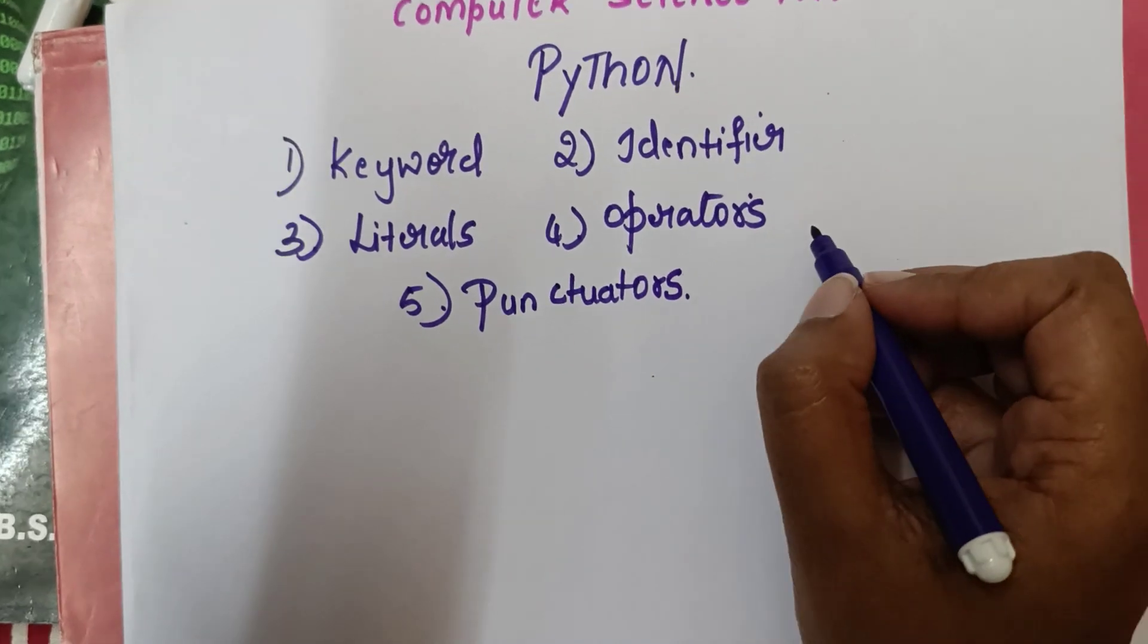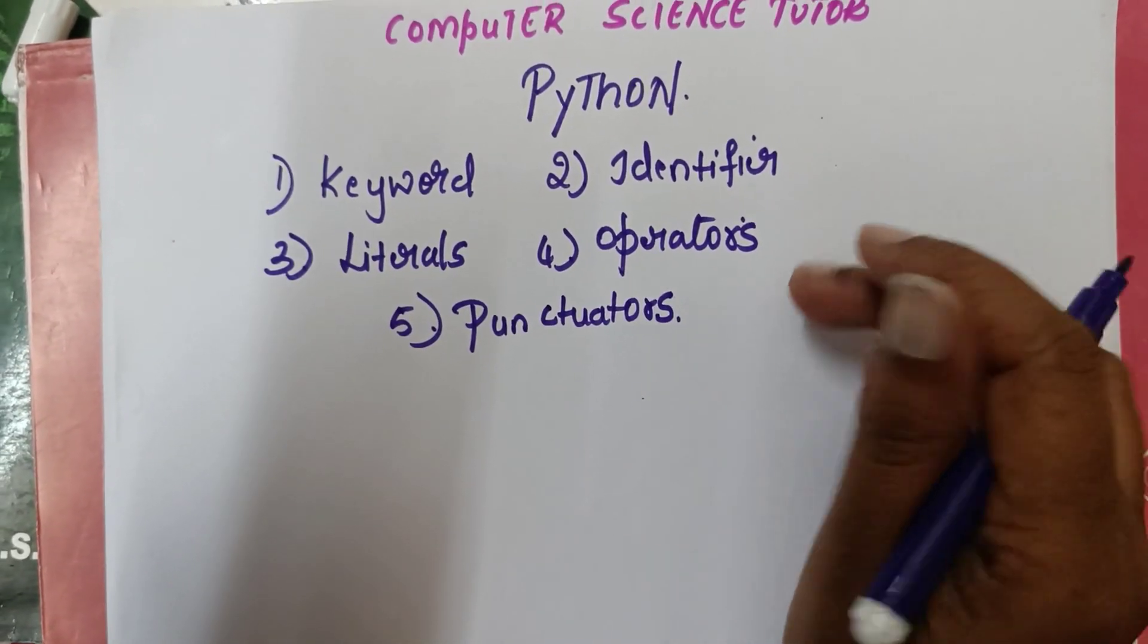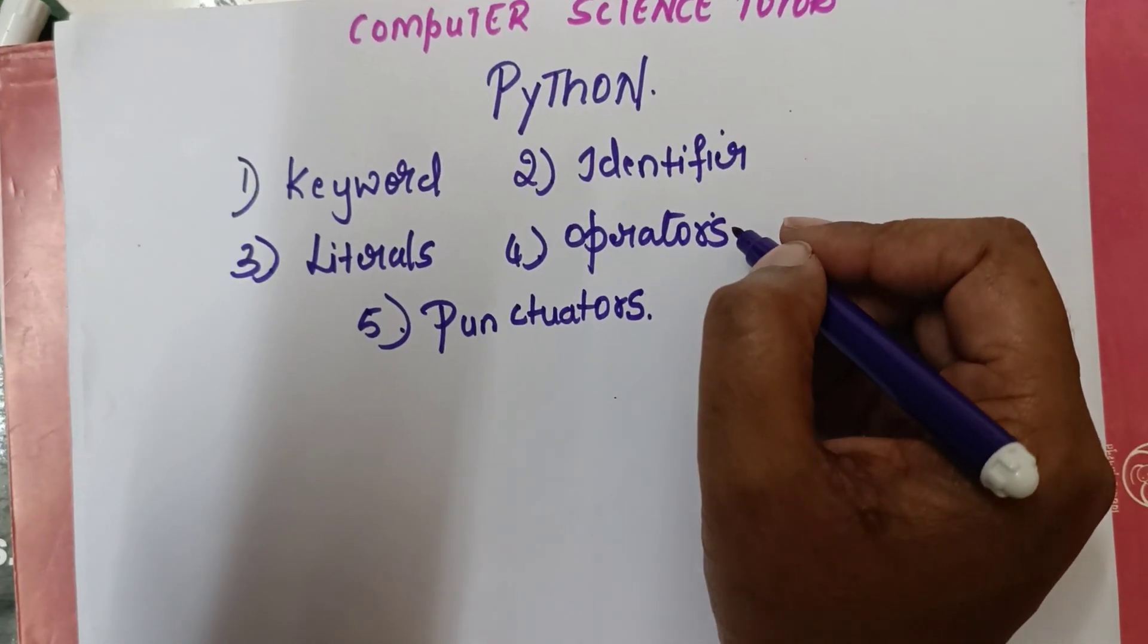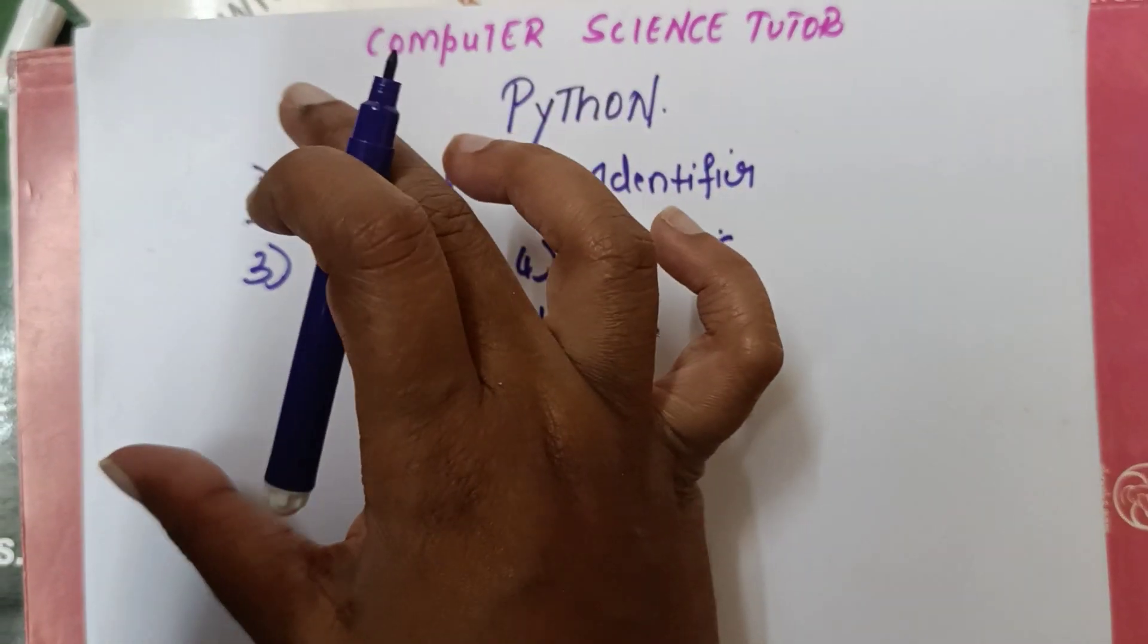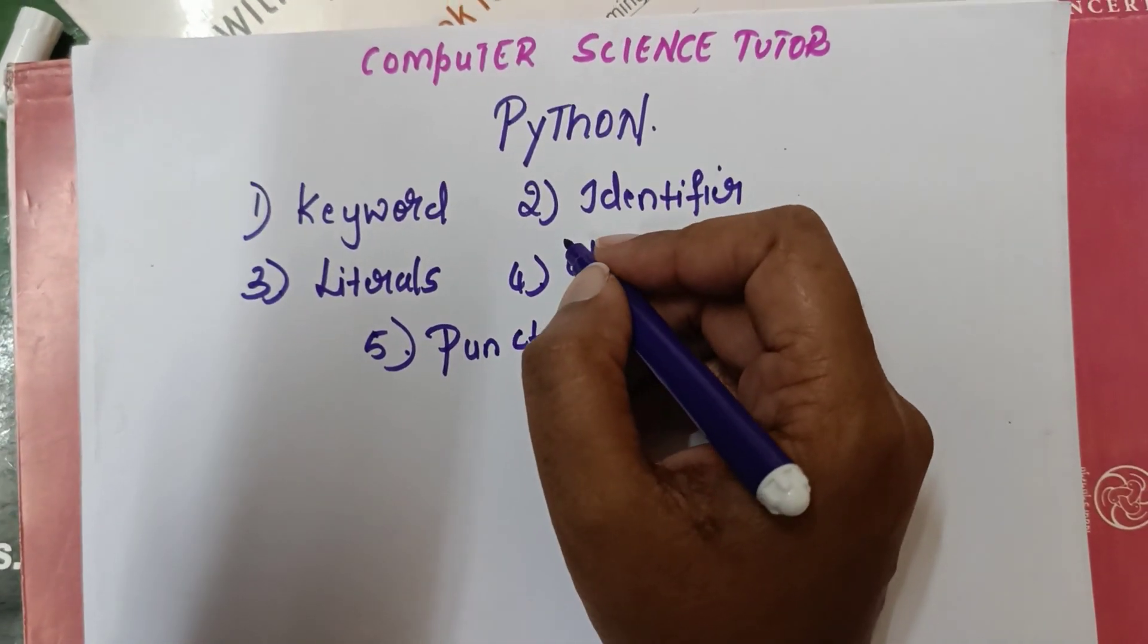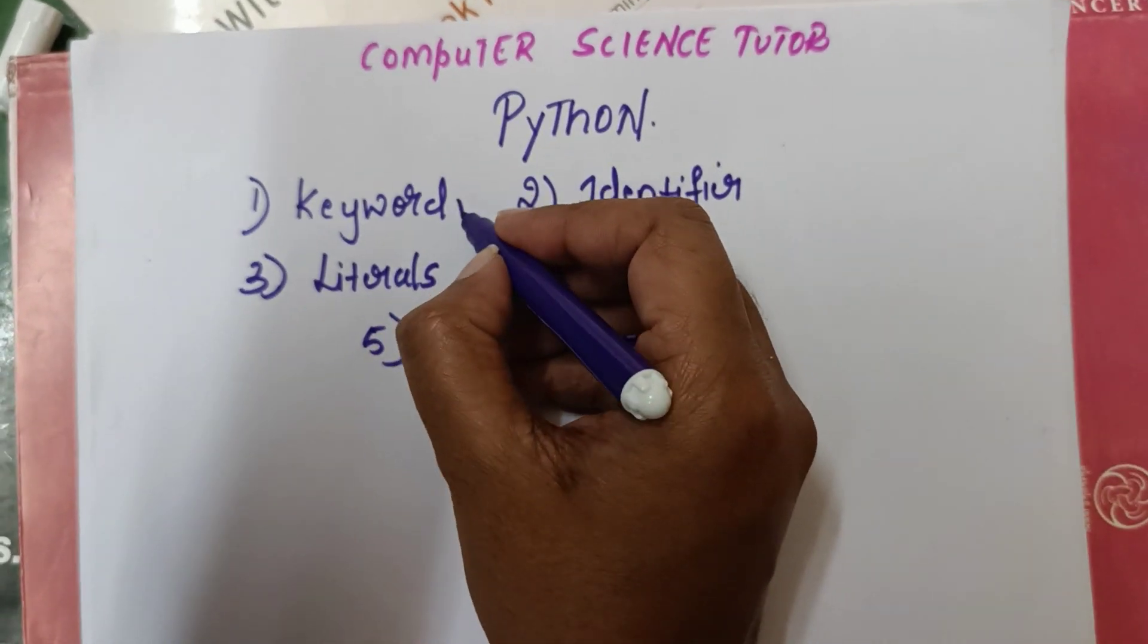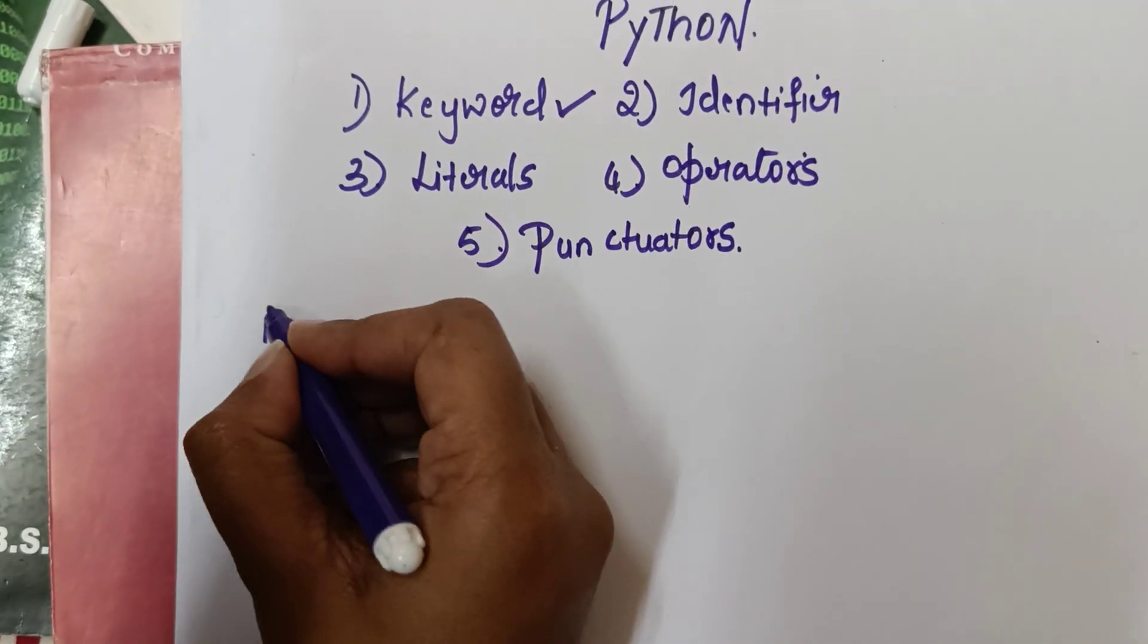These five are the basic things to design Python. These are the things that you can use to design Python. In this section, I am going to explain keywords. Let us see what keywords are in detail.